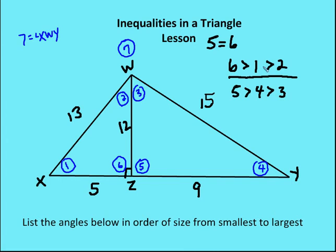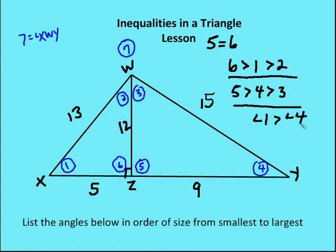So I have six and five which are equal to each other, and they're all greater than one, two, four, and three. Let's go back and take a look at the larger triangle to establish a relationship there. We're going to see that angle one is going to be larger than angle four, because angle one is opposite the side of length 15, which is longer than WX. So since WY is longer than WX, angle one is greater than angle four.